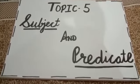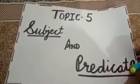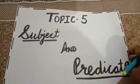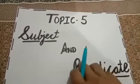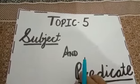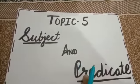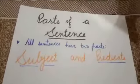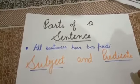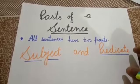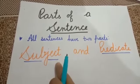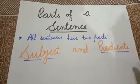Good morning, my dear students. In the previous video we already learned about what a sentence is and the types of sentences. Today we will learn about our next topic, that is subject and predicate. First of all, we will learn about parts of a sentence. There are two main parts of a sentence: subject and predicate.